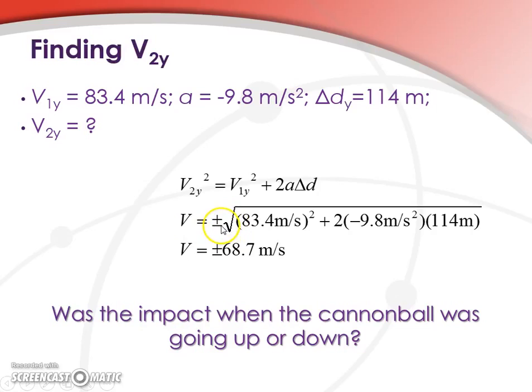Now notice the plus-minus term here. We get two solutions that fit the problem, right? We can get positive 68.7 meters per second or negative 68.7 meters per second. And both of these solutions are real. We just have to ask ourselves, was the impact when the cannonball was going up, i.e. positive 68.7 meters per second, or was it when it was going down? And of course, from our diagram we saw that it was going up, and so our answer is that the vertical velocity is 68.7 meters per second.